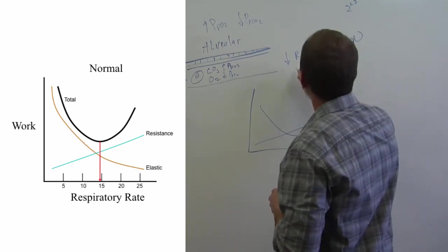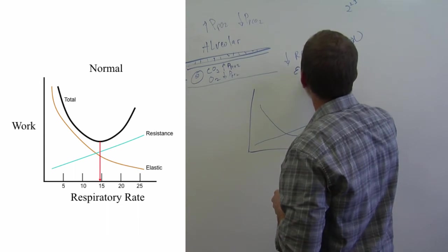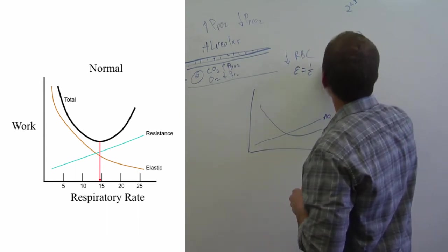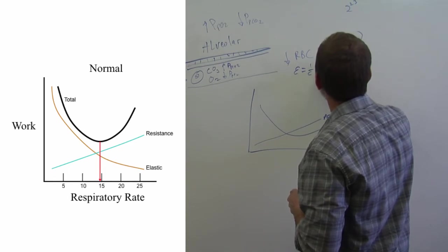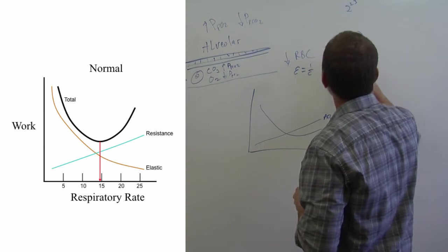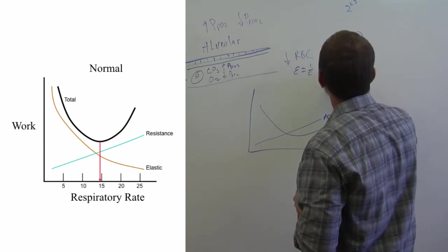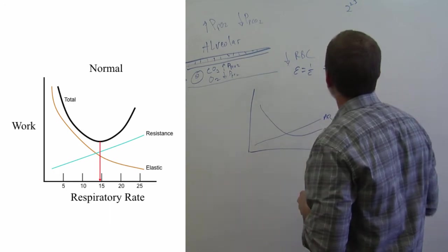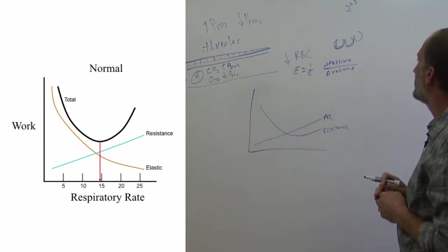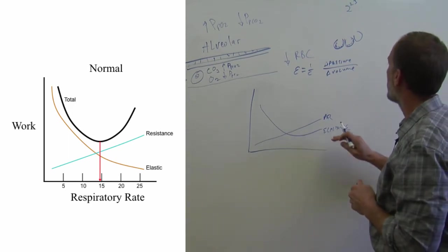So elastance is one over compliance. And that is a change in pressure over a change in volume. So how much pressure does it take to then get that change in volume? And that's your elastance work.